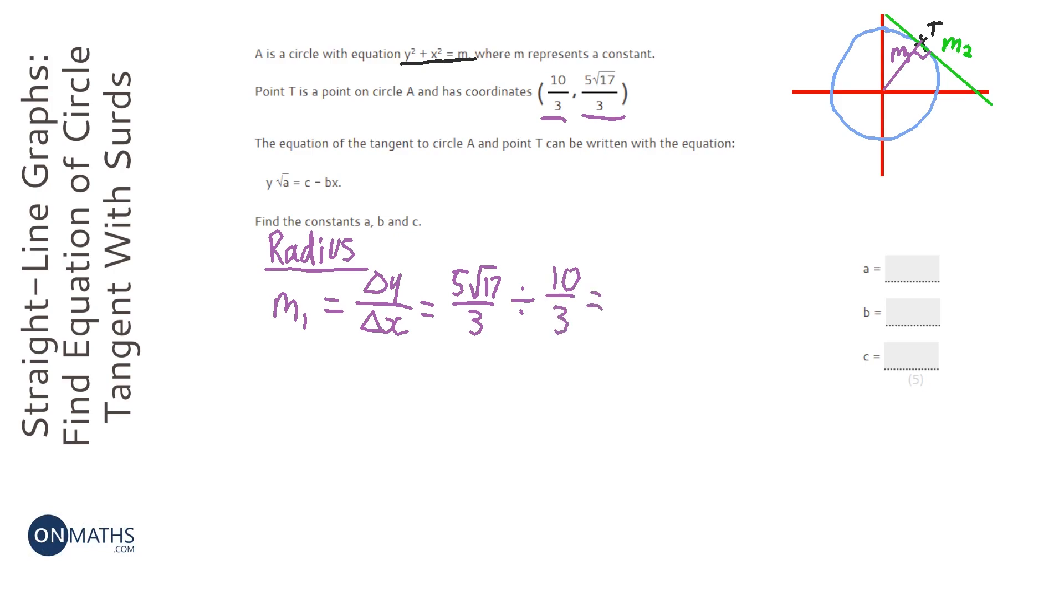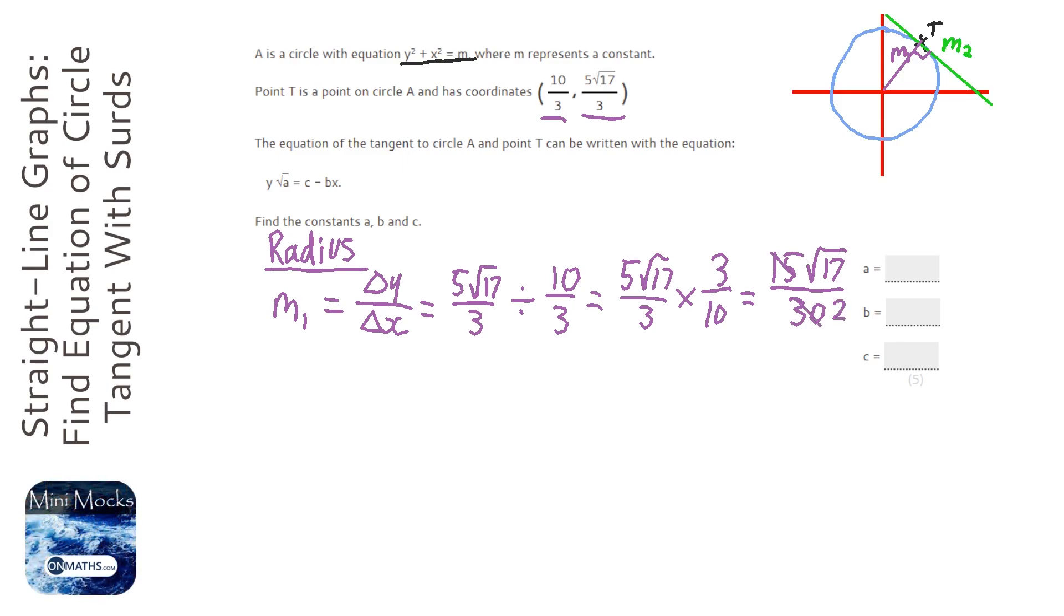So, another area of maths we need to know is KFC, or same change flip. Whenever we're dividing with fractions, we keep the first one the same, we change the divide to a times, we flip the second one. Now, we can times them. So, 3 times 5 is 15. So it would be 15 root 17 over 3 times 10, which is 30. And if you look at the 15 and 30 cancel to make that just 2. So, root 17 over 2. So, m1 is root 17 over 2.